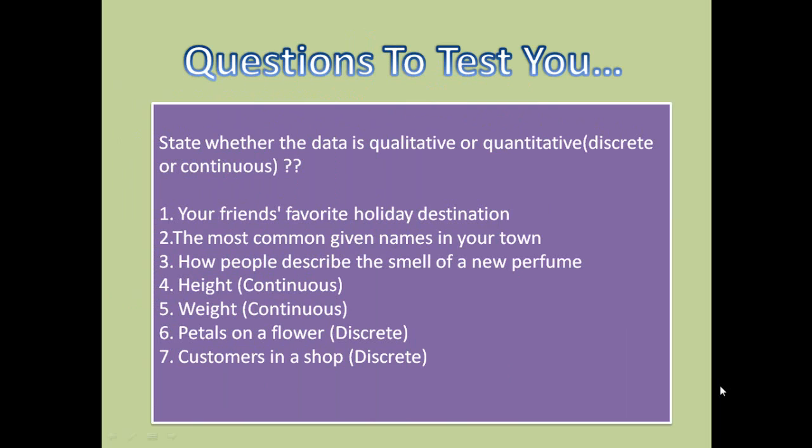These are a few questions to test you based on the previous slide — whether the data is qualitative or quantitative, and if quantitative, whether discrete or continuous. One of them is height. Height could be 5 feet 6 inches or it could take the form of a decimal, so it is continuous in nature, and since it can be presented numerically, it is quantitative.